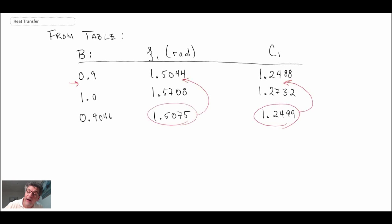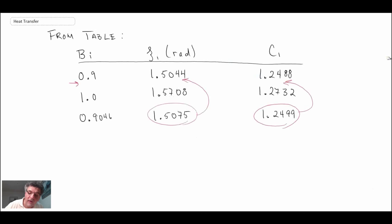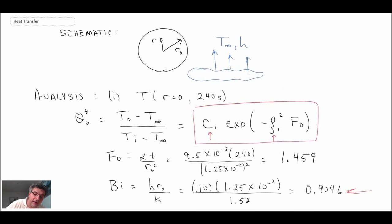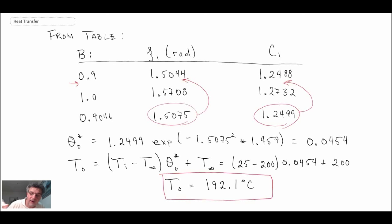We've done the linear interpolation and that has enabled us to get c₁ and ζ₁. So we can now use this equation to evaluate θ₀*. What I'm going to do is take that value of θ₀* and use this equation. What we're looking for is T₀ because that will be the center line temperature at 240 seconds. We plug in the values and we get T₀ = 192.1°C. That is our center line temperature after 240 seconds and that is the answer to part one.